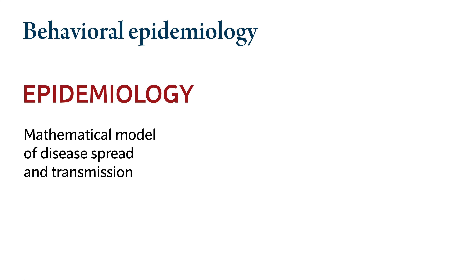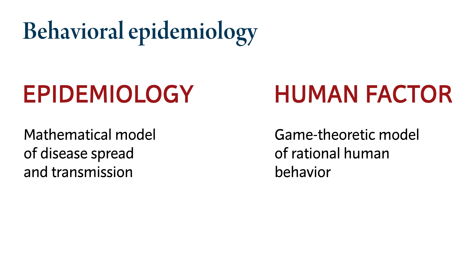The effect of human behavior on the transmission of an infectious disease is studied by behavioral epidemiology. Epidemiology is based on deterministic mathematical models of disease spread and transmission, but the human factor can be accounted for by game-theoretic models of rational human behavior. The strategies that individuals choose in the game depend on the state of the pandemic, but these choices also affect the spread of the disease. This results in a coupled model with a feedback loop where the state of the disease affects the rational choices of humans, and those rational choices in turn affect the progression of the spread of the disease.